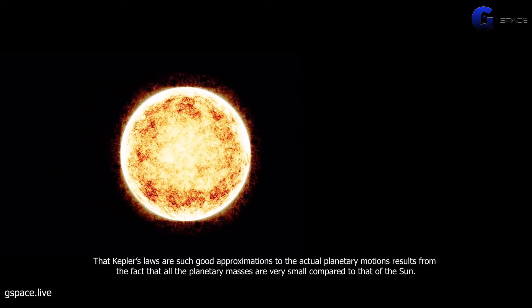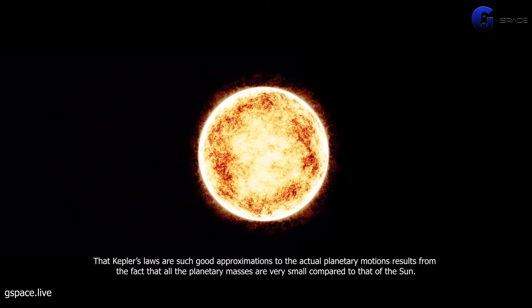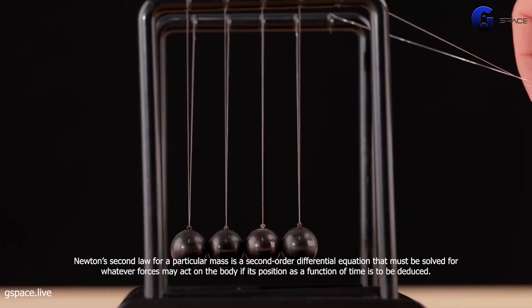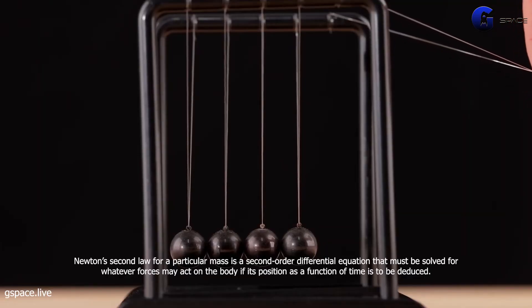That Kepler's laws are such good approximations to the actual planetary motions results from the fact that all the planetary masses are very small compared to that of the sun. Newton's second law for a particular mass is a second order differential equation that must be solved for whatever forces may act on the body if its position as a function of time is to be deduced.